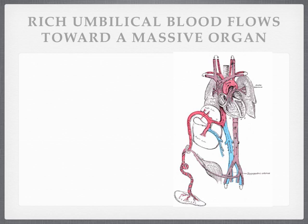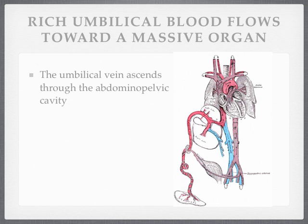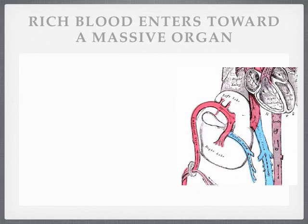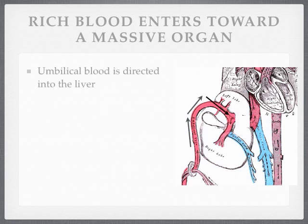If we follow the blood as it flows up toward the liver, it is coming up through the abdominal pelvic cavity, up the anterior part of that. As you can see in the picture, the vein curves over and comes down into the liver from above. Let's expand this box so we can see it better. You can see that the umbilical vein is going to send the blood right down into the structure of the liver and to its cells.